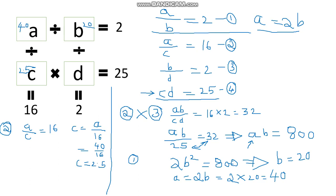Finally, from equation number 4, c multiplied by d equals 25. Substituting c equals 2.5, after simplification d equals 10.